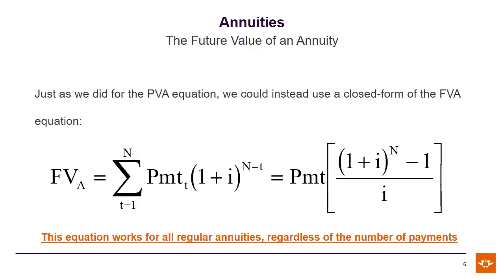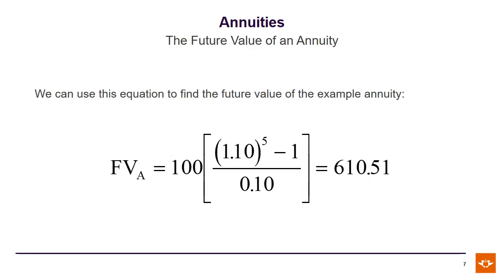Again, as in the previous lecture when we looked at present values, we can find a closed form solution for the sum — or the future value — of those annuity payments at the end of N years, and we see that now in the slide. Using that formula, along with the information — the R100 annuity per year, the 10% discount rate, and the term of 5 years — we get our future value of R610.51.